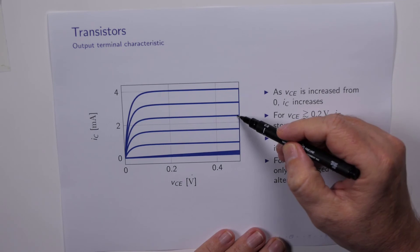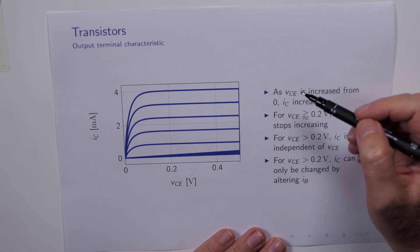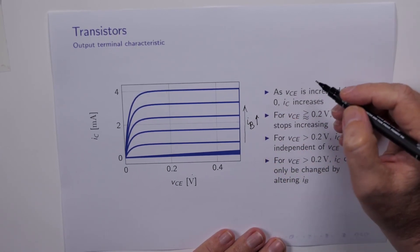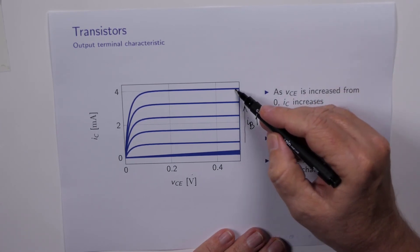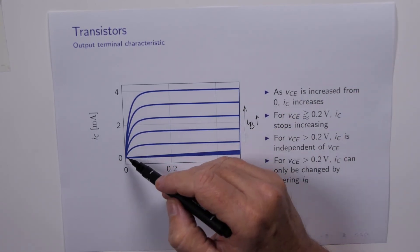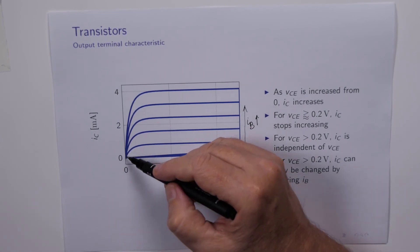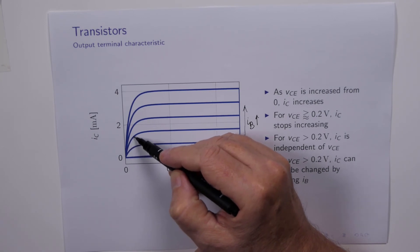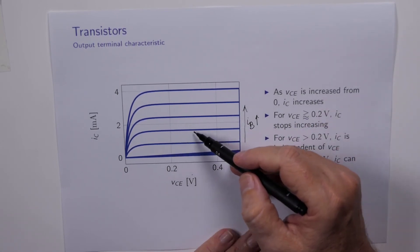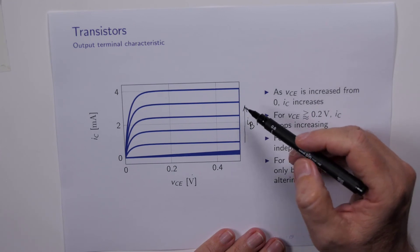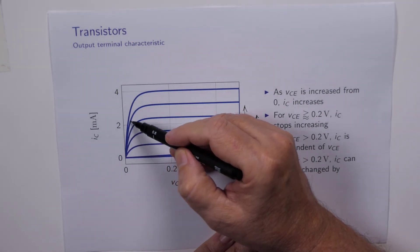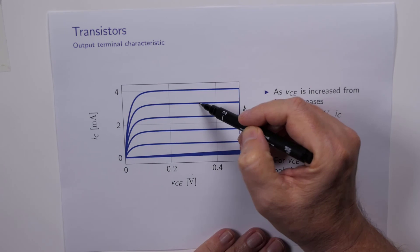Each one of these curves corresponds to a different value of IB, and in fact IB increases in this direction. So IB is smaller, IB is larger. Now the interesting thing is that when we choose a particular value of IB and we start increasing VCE, the current curve flattens out and becomes this constant value. The same behavior if we were to change to another value of IB, this much larger value of IB, we start to increase the collector current, but then it too rolls off and stays constant.